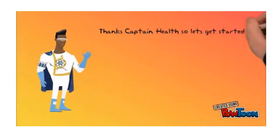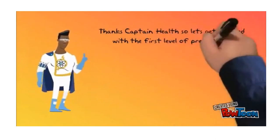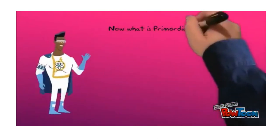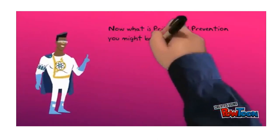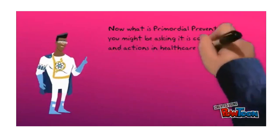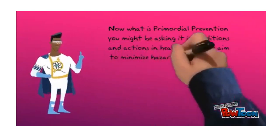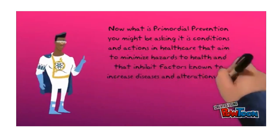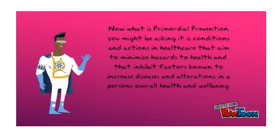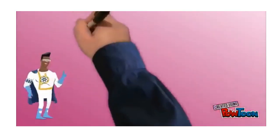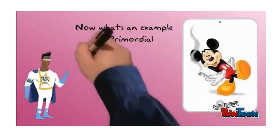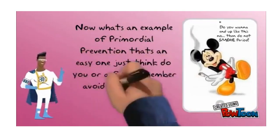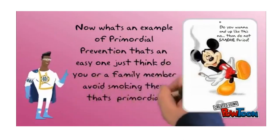The first level of prevention is primordial prevention. Primordial prevention refers to conditions and actions in healthcare that aim to minimize hazards to health and inhibit factors known to increase diseases and alterations in a person's overall health and well-being. An example of primordial prevention is avoiding smoking.